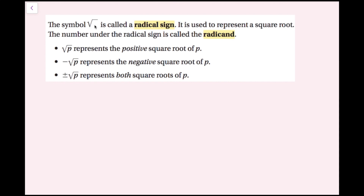This symbol is called a radical sign. It is used to represent a square root. The number under the radical sign is called the radicand. So this is read 'the square root of p,' and it represents the positive square root of p. If I have a negative sign next to it, it's the negative square root of p. And if I have plus or minus the square root of p, this represents both square roots of p.